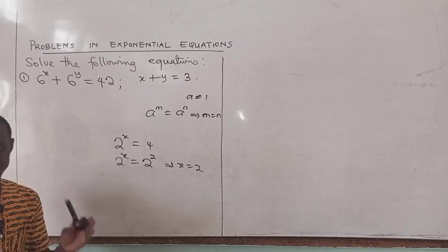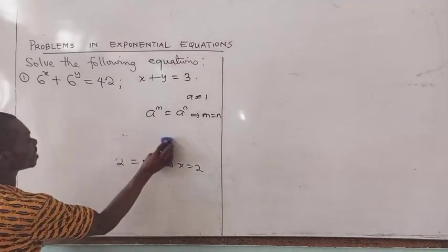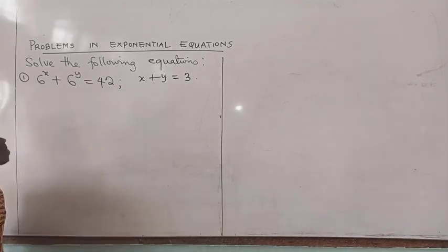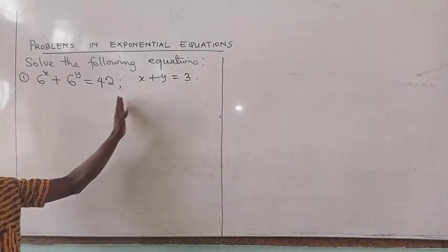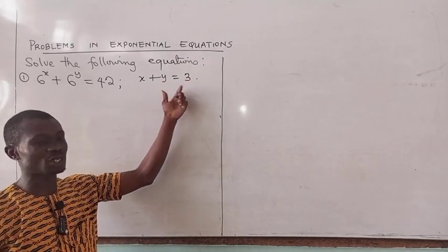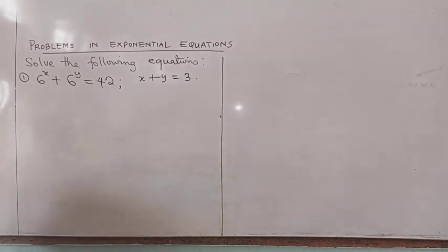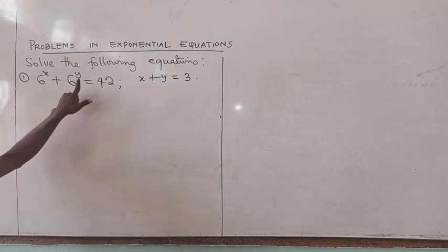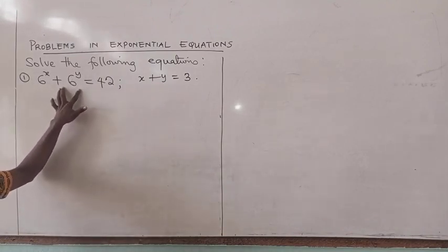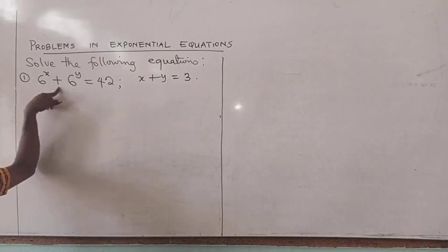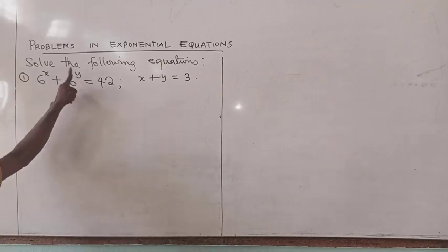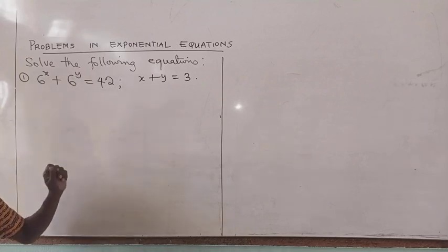And that is what we want to look at in this video. We have two problems to solve. The first one: 6 raised to the power x plus 6 raised to the power y is equal to 42, and there is a second equation. The bases here are the same, but there is addition so I cannot apply the rule of indices. The powers are not the same and they are in different variables.